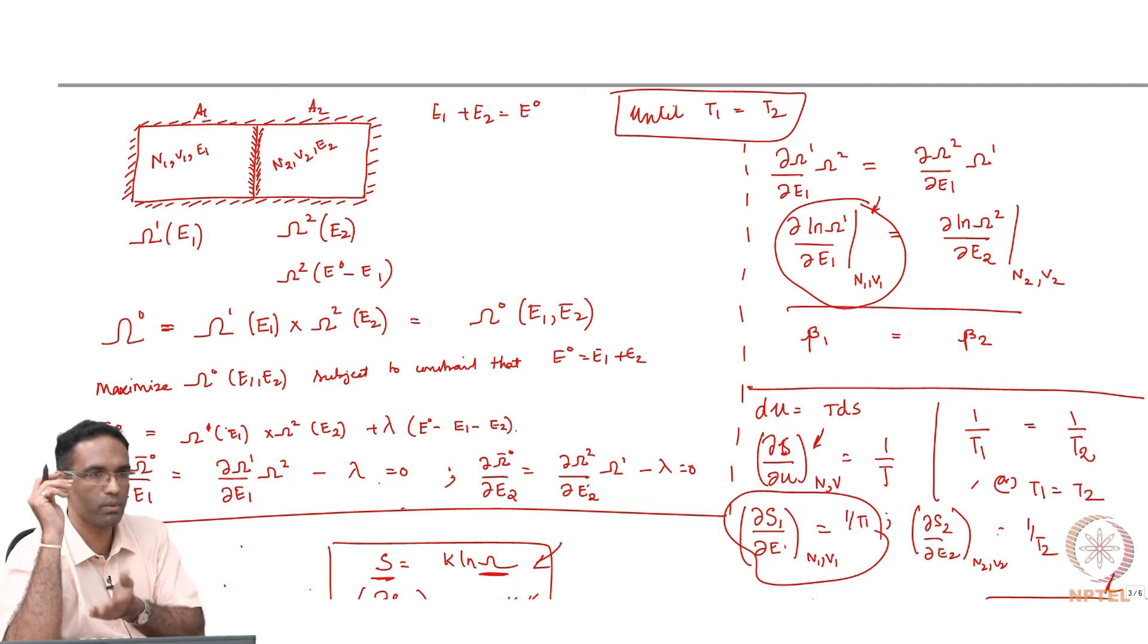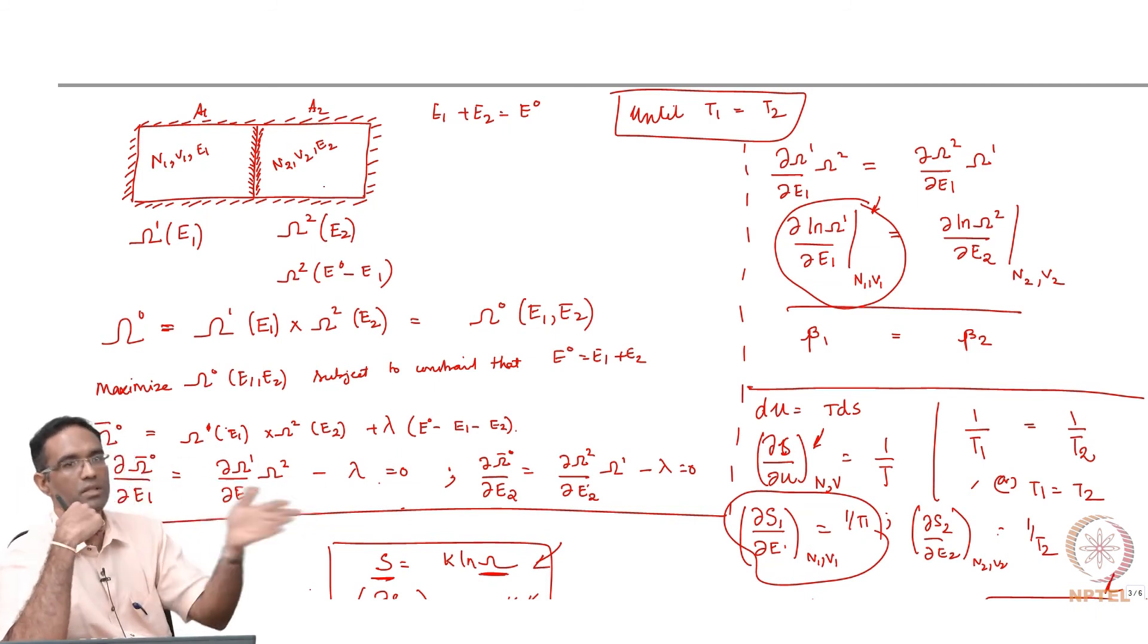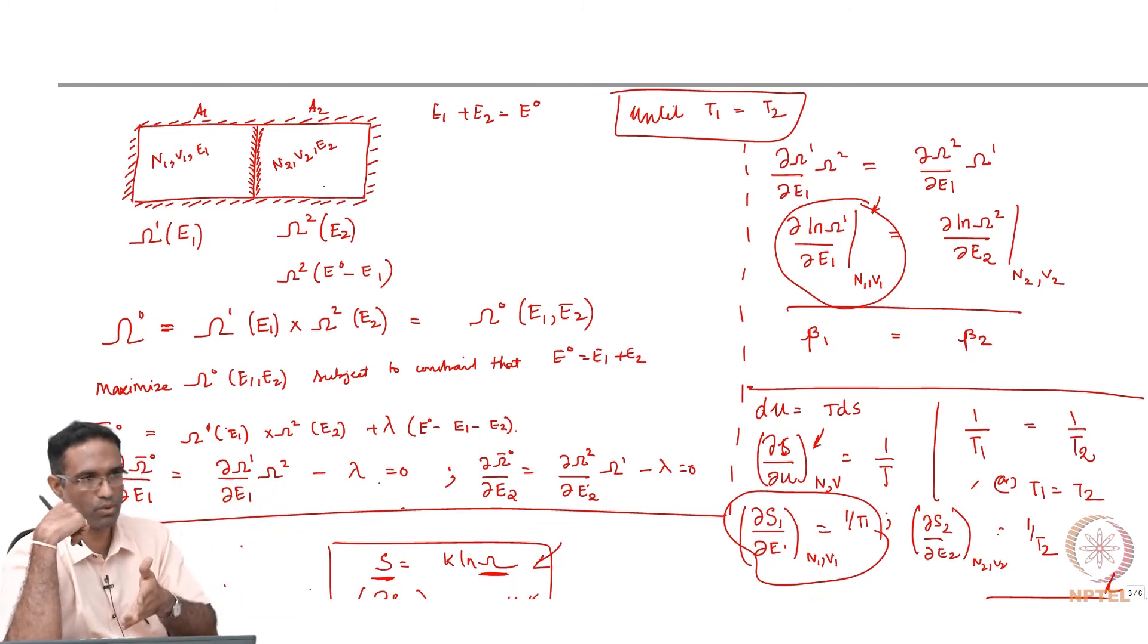P1 should be equal to P2. In addition to that, if you are also allowing the condition for them to exchange the particle numbers, then what should be the condition? The chemical potentials in both ends - the exchange of species will happen until mu 1 is equal to mu 2.